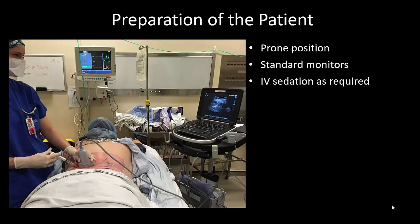Following consent and timeout procedures, the patient is placed in the prone position with intravenous access and continuous monitoring of vital signs. Sedation is given as required. The ultrasound machine should be positioned for optimal ergonomics. In this arrangement, injection on the contralateral side is usually performed using a backhanded needle insertion. If one is not comfortable with this, the machine should be moved as needed.